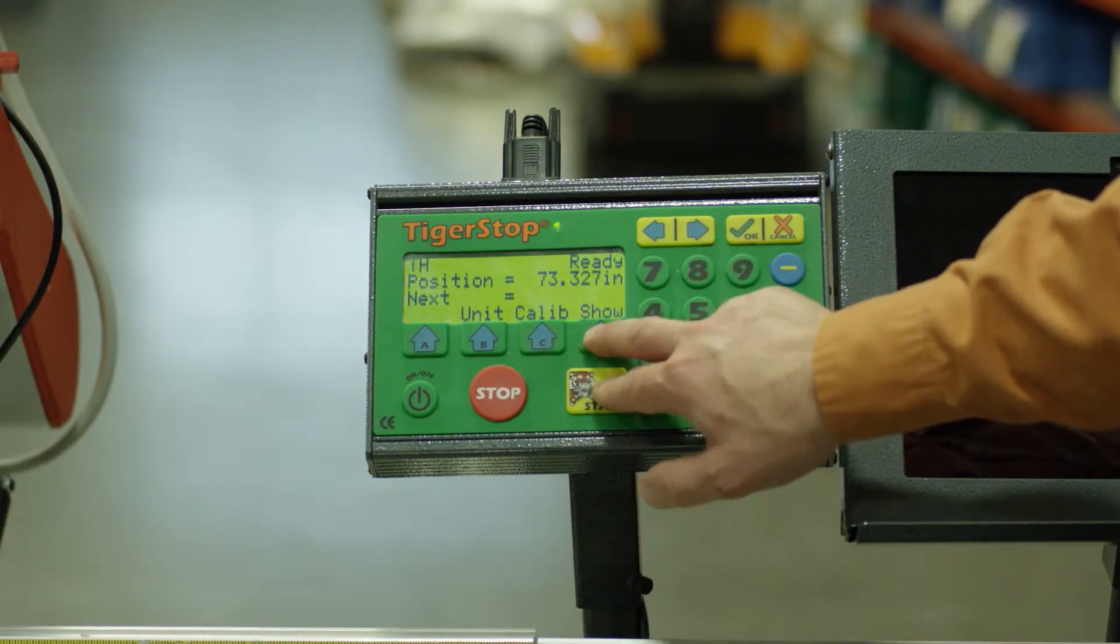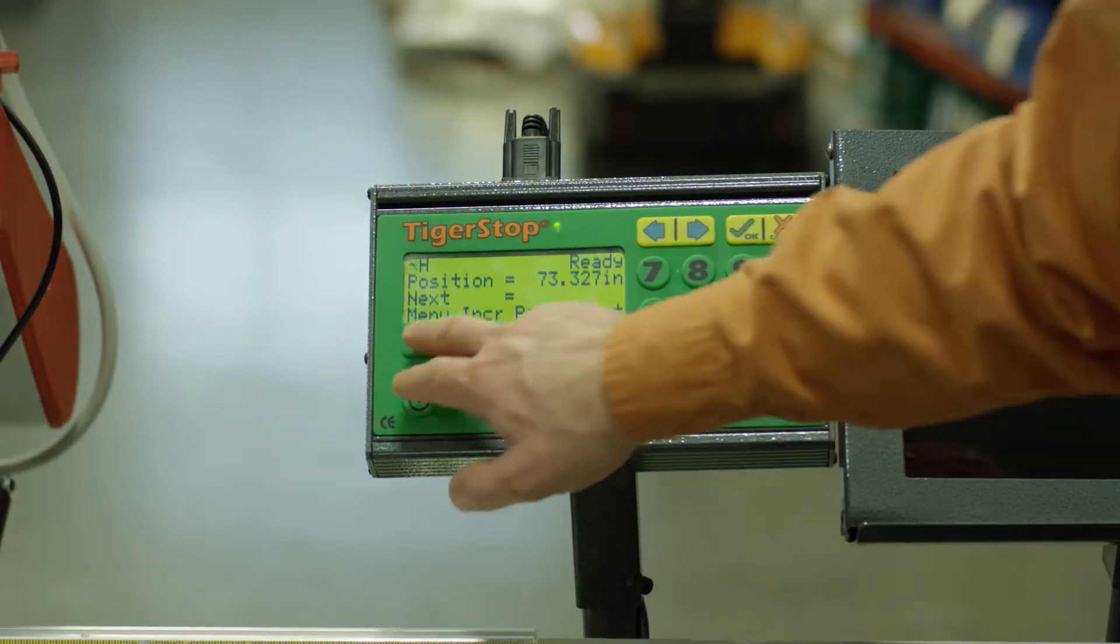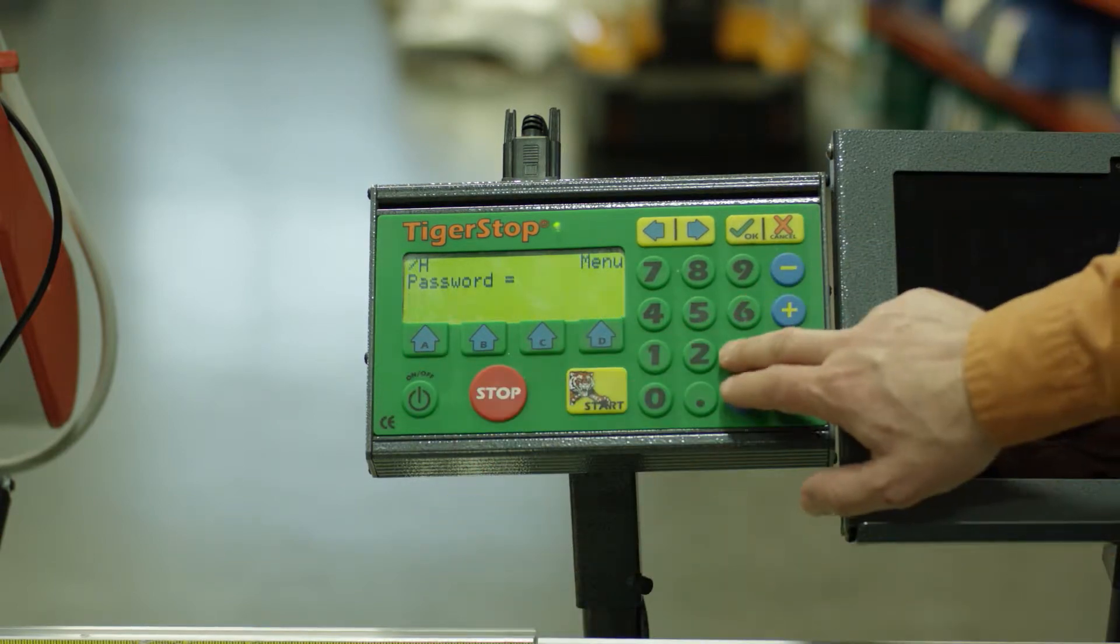So we're going to go ahead and press D for show and then A for menu. We'll enter our password and equal.